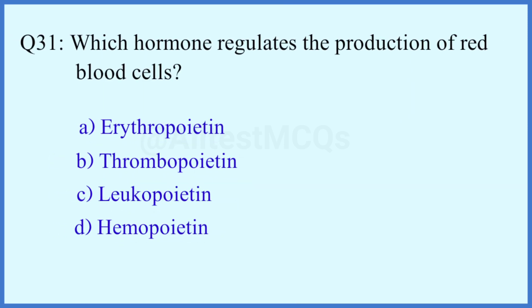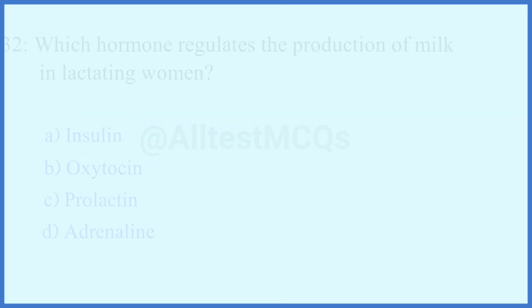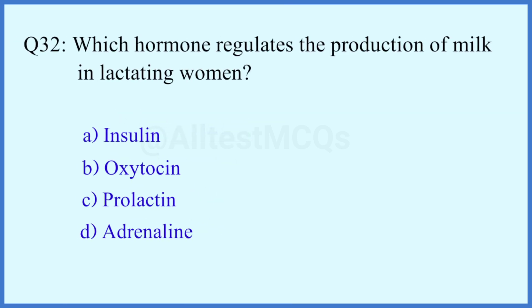Question number 31. Which hormones regulate the production of red blood cells? The right answer is option A: Erythropoietin.